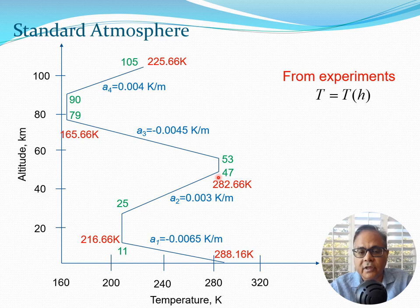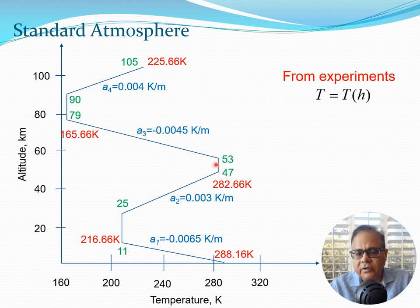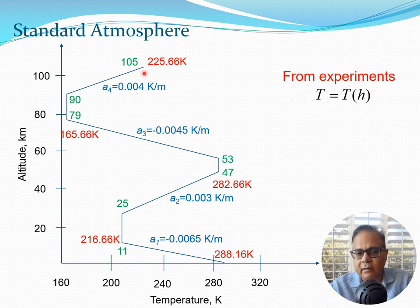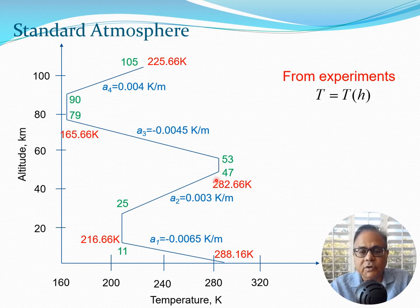From 11 kilometers to 25 kilometers, rather surprisingly the temperature remains constant at 216.66 K. After 25 kilometers to 47 kilometers, even more surprisingly the temperature is actually increasing to 282.66 K. At that point again there is a constant temperature region from 47 to 53 kilometers. After 53 kilometers, again we get a decrease all the way to 79 kilometers where the temperature is 165.66 K. Here again there is a constant region to 90 kilometers, and then there is one more increase to 225.66 K. The constant regions are known as isothermal regions because temperature remains constant.